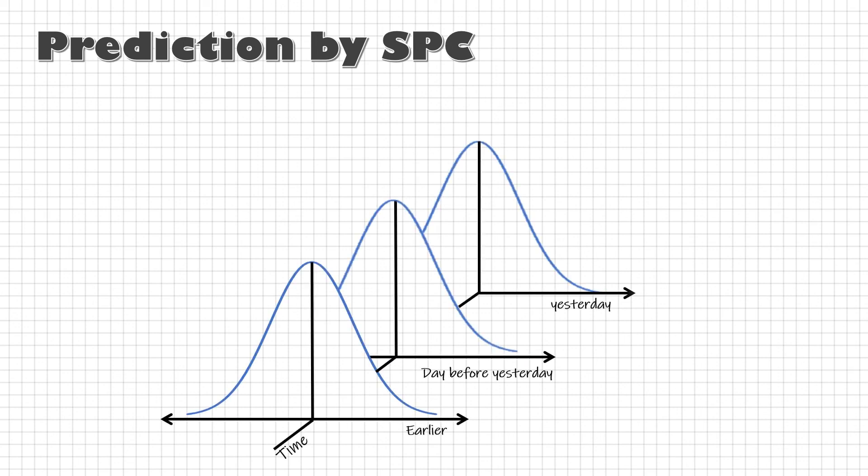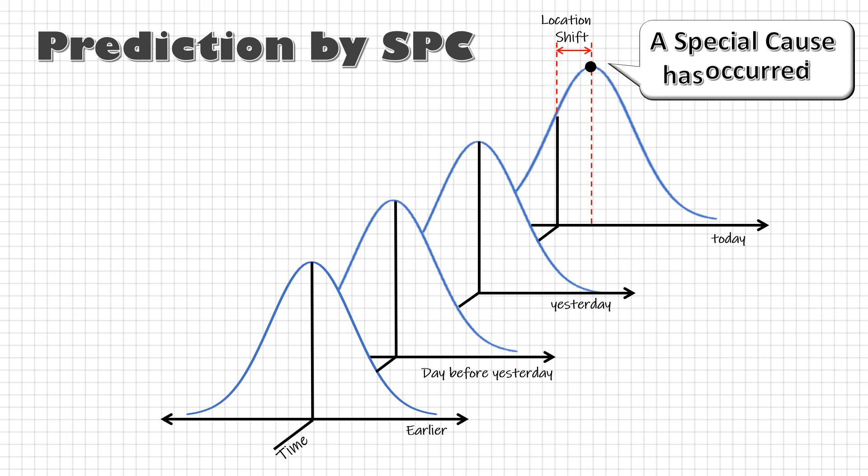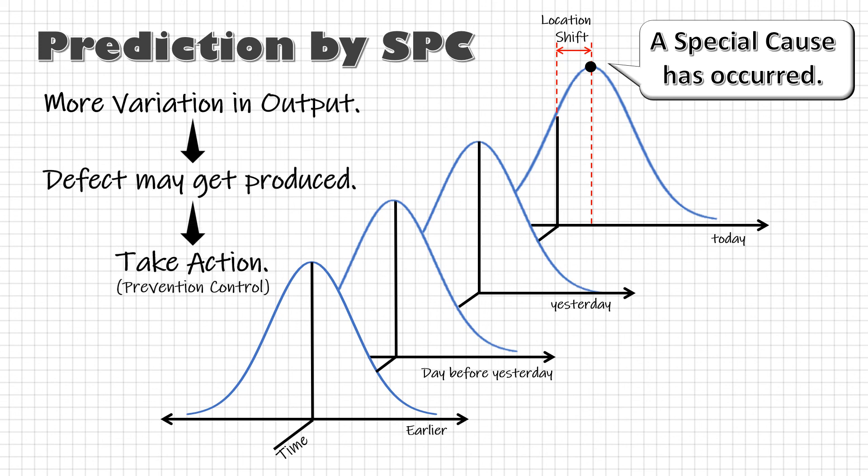And this is exactly what we are looking for. A change in location, spread, or shape in a process that is otherwise a stable process. This change means a special cause has occurred in the process. That means there will be more variation in the output. That means it is time to take action before the defect gets produced. Prevention. This is the power of statistical process control. We will understand more about the process curve and the standard deviation in the next video. See you there.